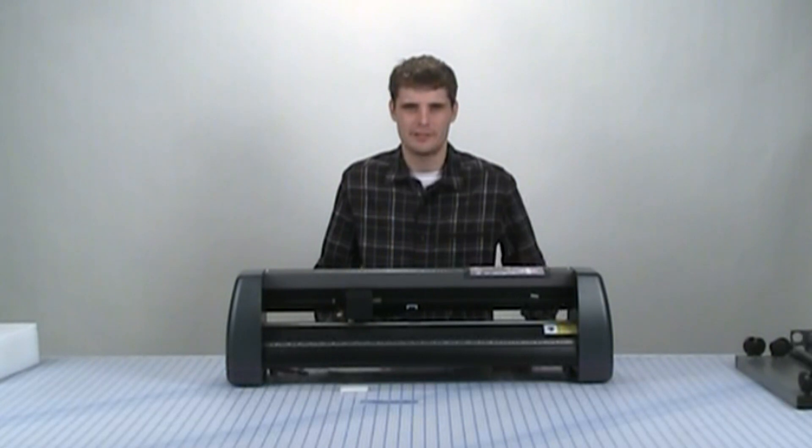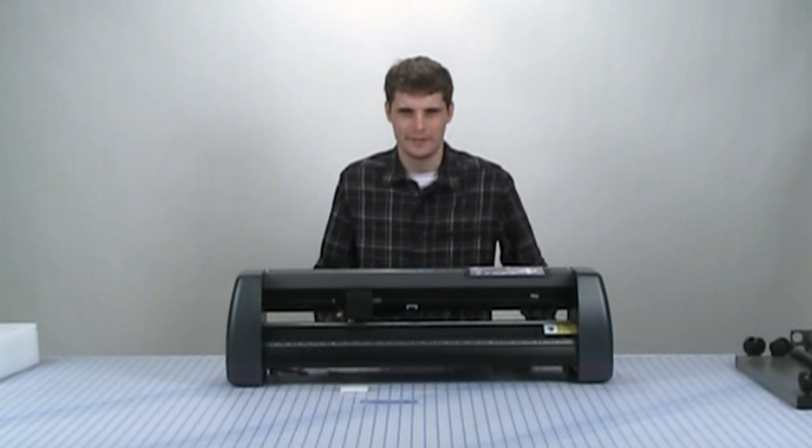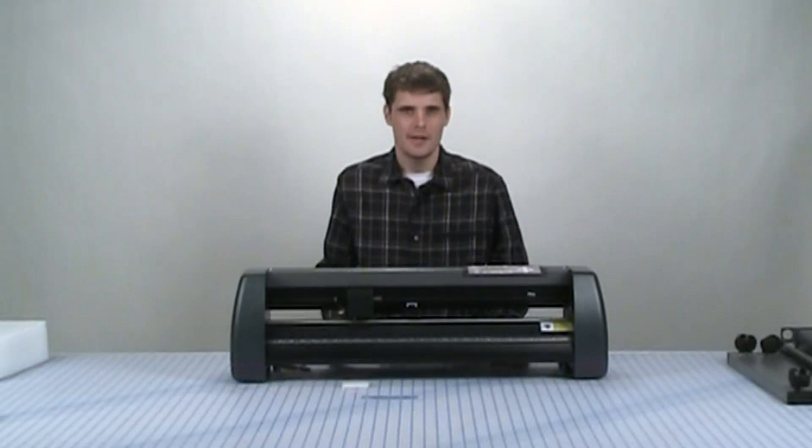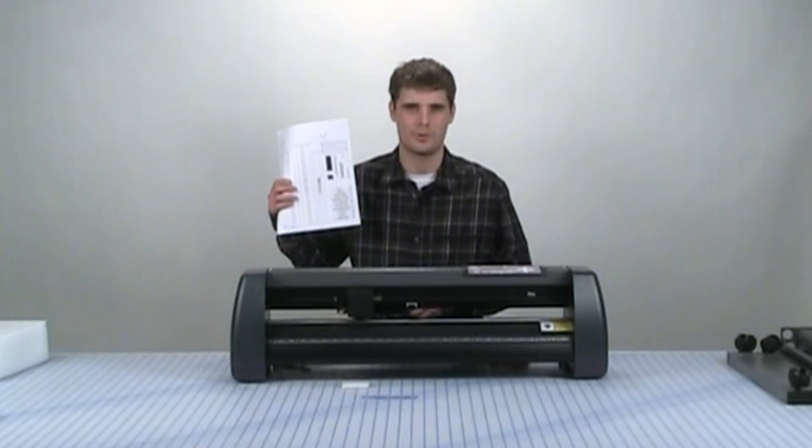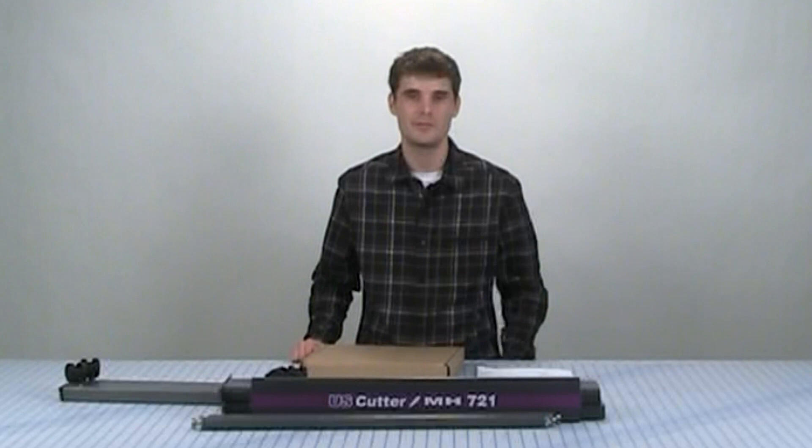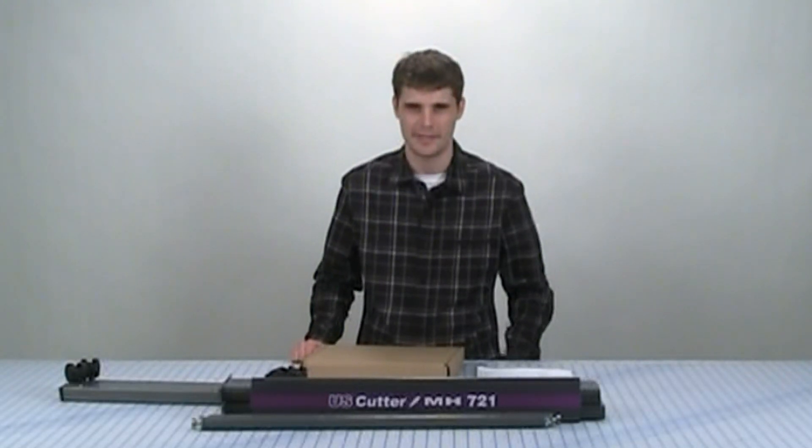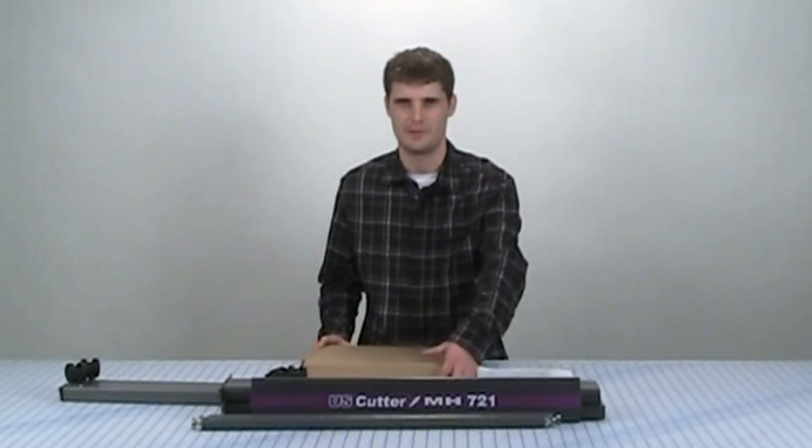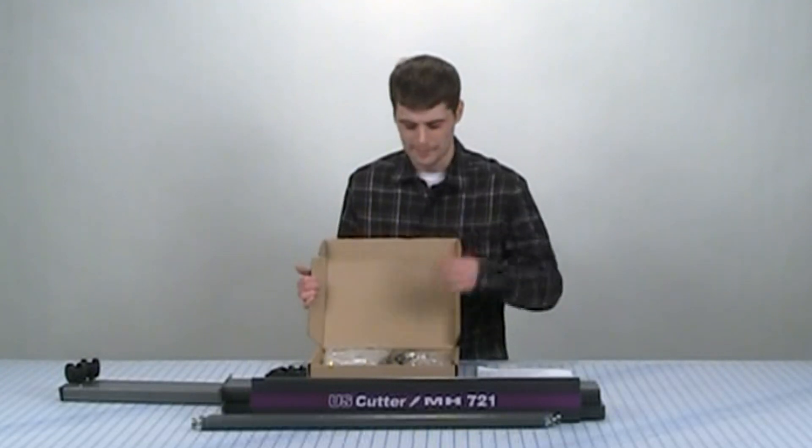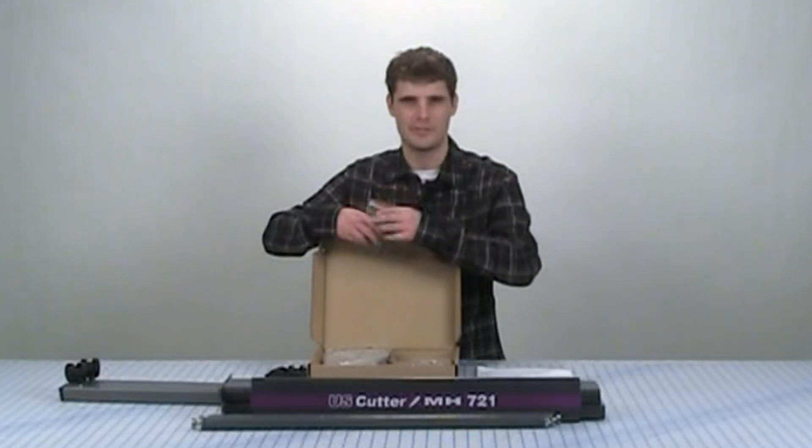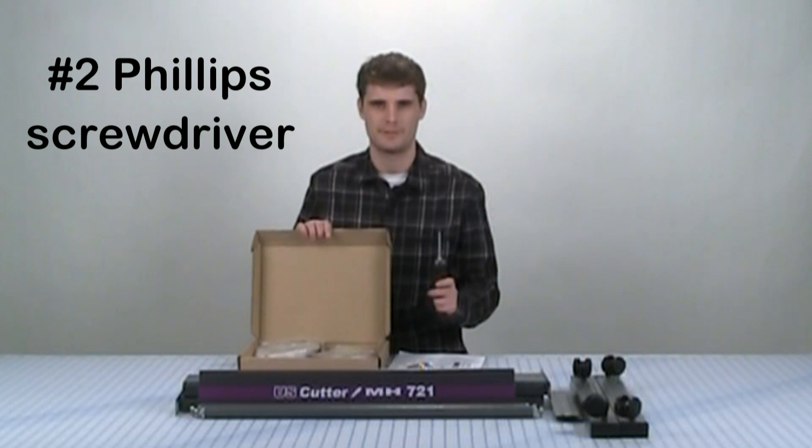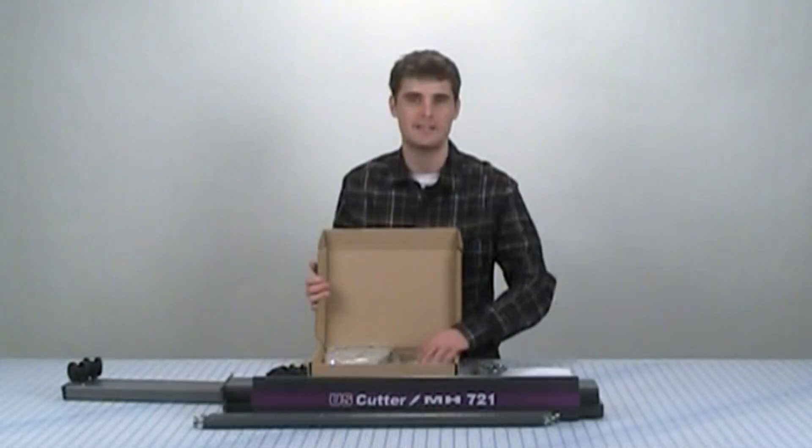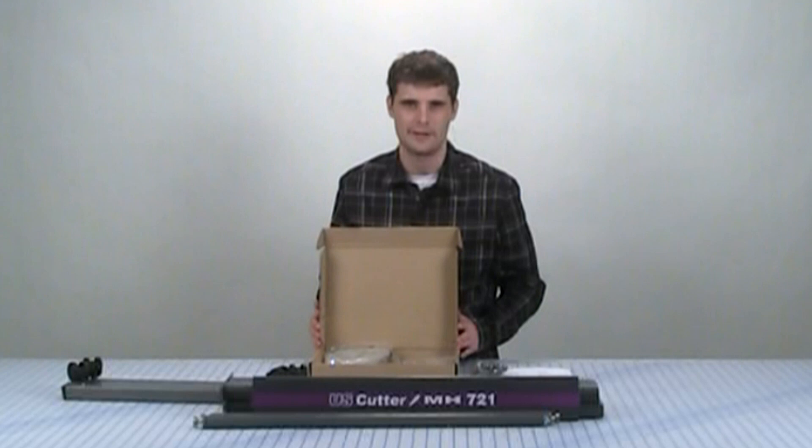Now that we've removed the packing material from our MH series vinyl cutter it's time to build the stand. For more detailed instructions we do have a stand assembly guide that we keep on our support website. The tools and hardware that we're going to need to actually build the stand is all located inside the accessories box. Once you open it up you'll see a small bag containing screws and the casters for these screws. You're also going to need a number two Phillips head screwdriver for the rest of the install. Keep this accessories box handy as we'll go to that later on in the video.